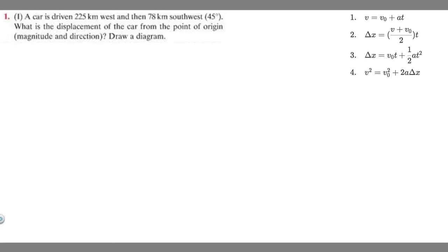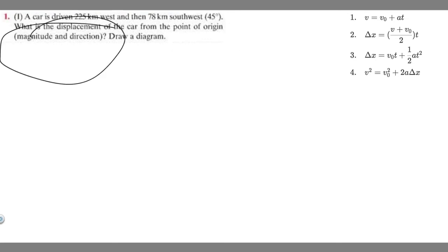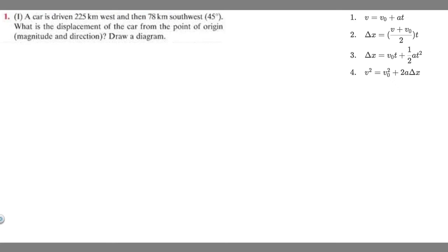In this problem, we're told a car is driven 225 kilometers west and then 78 kilometers southwest at 45 degrees. We're asked to find the displacement of the car from the point of origin — specifically the magnitude and direction — and we're told to draw a diagram.